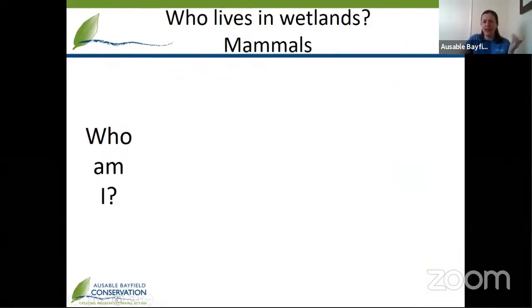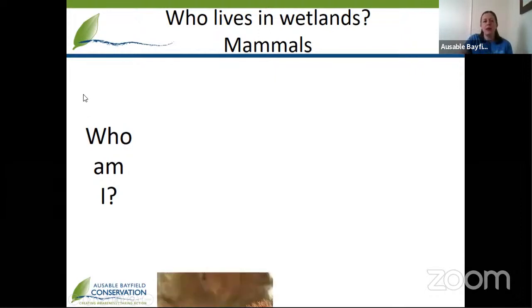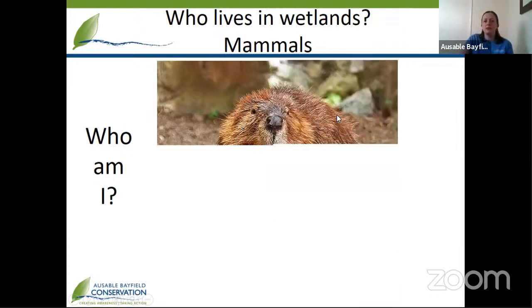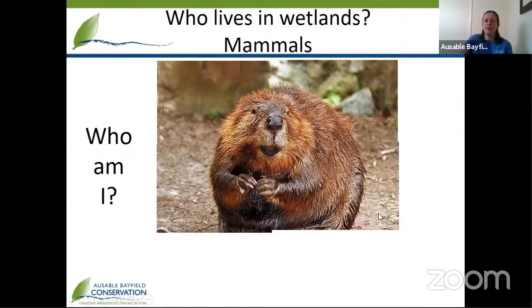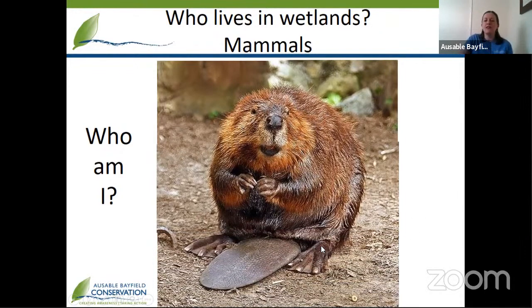So who lives in a wetland? The first animal we're going to look at is a mammal. For us to know that something is a mammal, it's going to have some fur. Can you guess who this animal is? Mammals also drink milk from their mothers. This animal has little claws, and it's a big round mammal. Look at those webbed feet and that big flat tail — it's a beaver! Beavers make their homes in wetlands.